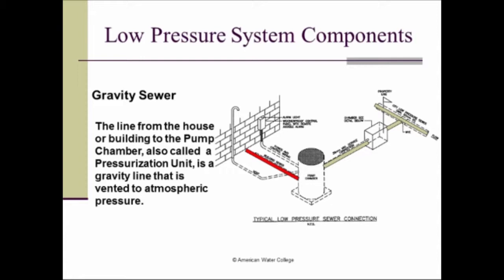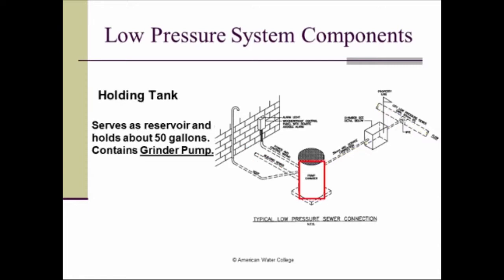So at that point, it's not under pressure, it's at atmospheric pressure. Then it goes to a holding tank that serves as a reservoir and holds about 50 gallons. And in that reservoir is a grinder pump. And that's what's going to pressurize the water so it can make it into the force main. So we have a holding tank as another component of this low pressure system.